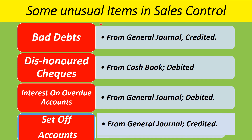Additional items found in a control account include bad debts, obtained from the general journal and credited in the control account. Stale checks come from the cash book and are debited in the control account. Interest on overdue accounts comes from the general journal and is normally debited. Set-offs are also obtained from the general journal and are credited in the control account.